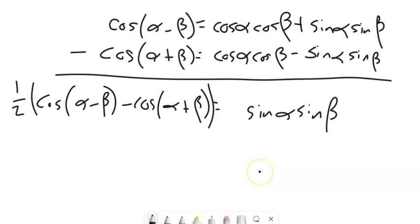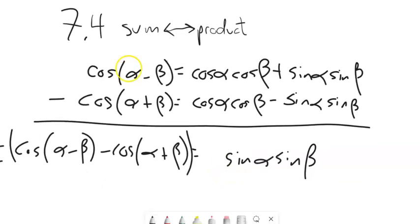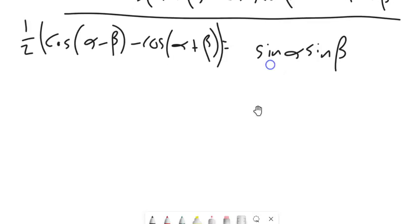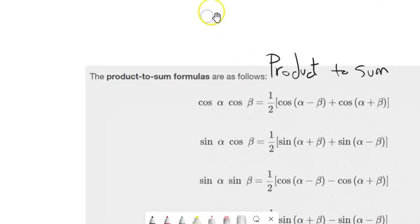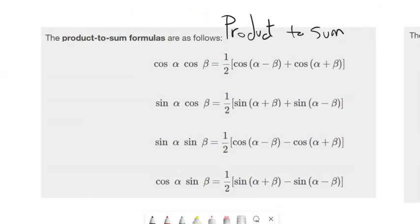So here are a couple of relationships, product-to-sum relationships. And what I want you to notice, if I did the same thing with the sine of alpha minus beta and the sine of alpha plus beta combined in the same way, I get some other ones as well.